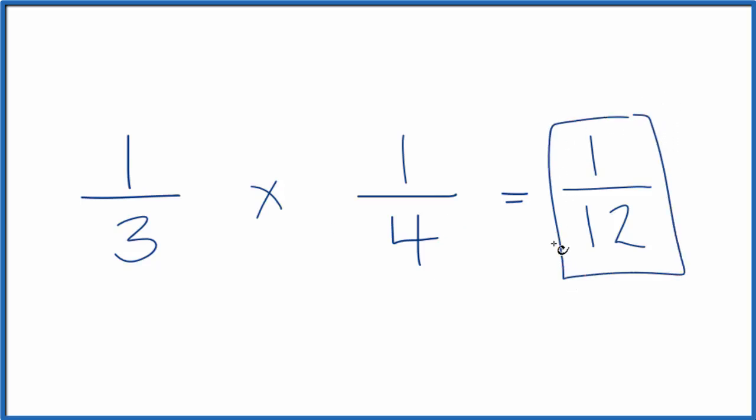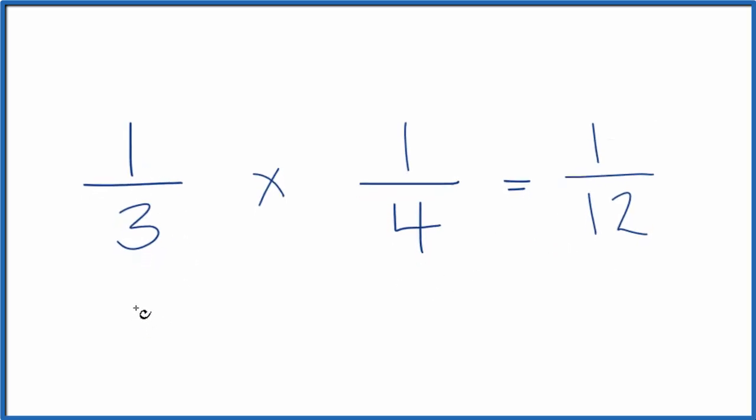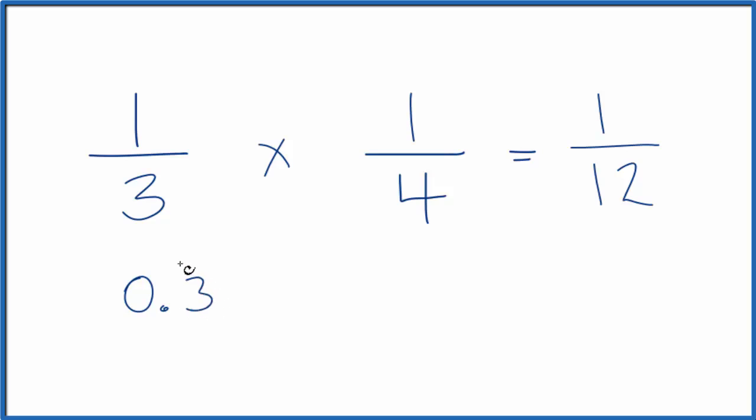We can look at decimals just to check that out. One-third, that's one divided by three, that's 0.333... the threes repeat, times one-fourth, that's 0.25.